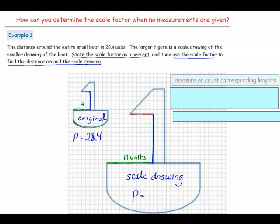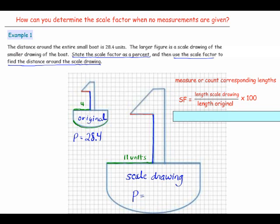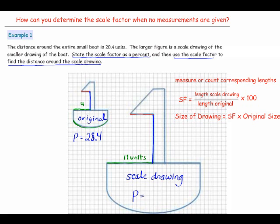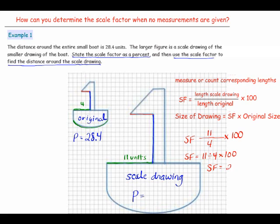Once you have measured or counted your corresponding lengths, you're going to calculate your scale factor. That is, the length in the scale drawing divided by the length in the original, times 100 — and that states your scale factor as a percent. So the length in the scale drawing is 11, the length in the original is 4. We do 11 divided by 4 times 100, giving us a scale factor of 275 percent.